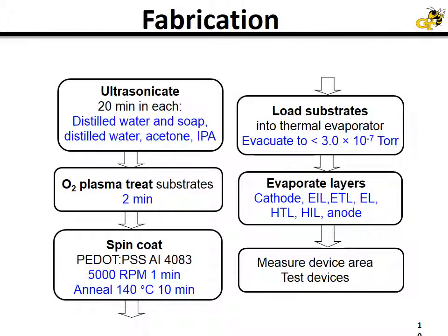I take those one-inch by one-inch glass slides, plasma treat them in an O₂ plasma system, and spin coat PEDOT:PSS. This is a polymer that, after it's deposited on the glass, basically helps allow the cathode that's later deposited to be deposited very smoothly on the glass substrate. After the PEDOT:PSS is annealed, those substrates are loaded into a thermal evaporator and pumped down to a base pressure of lower than 3×10⁻⁷ torr.